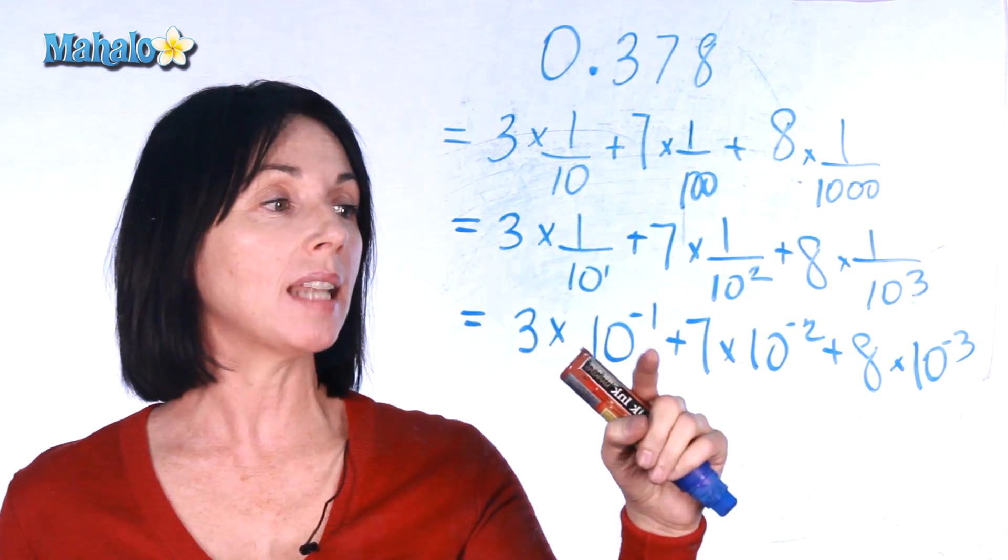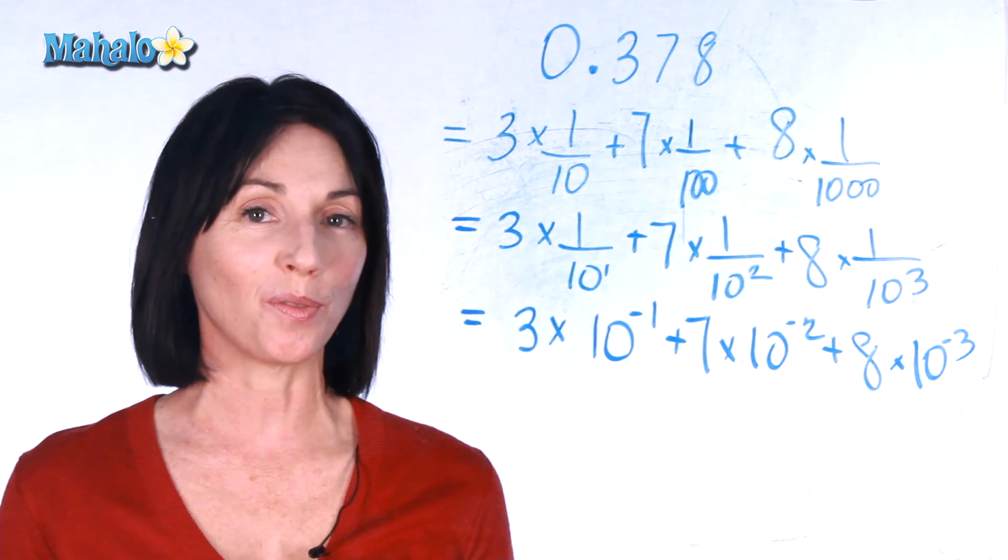And that's how you use negative exponents to write a decimal in expanded form.